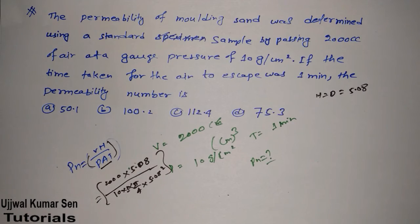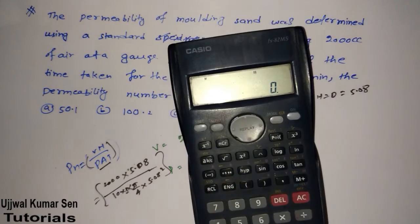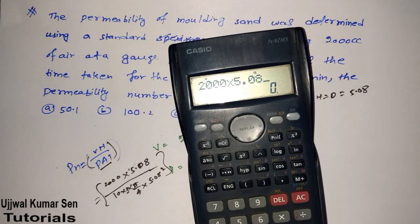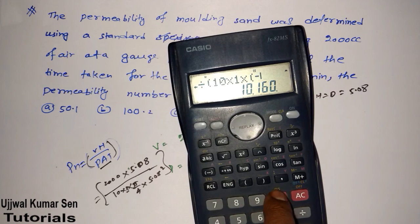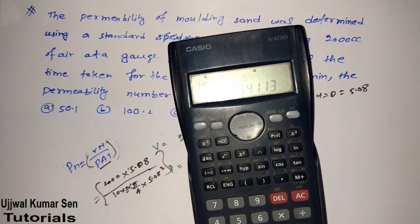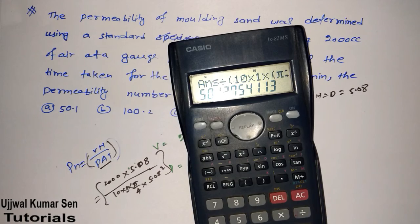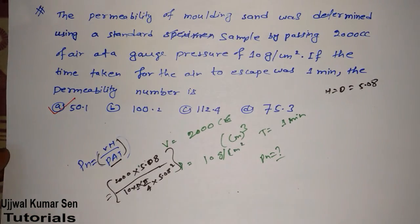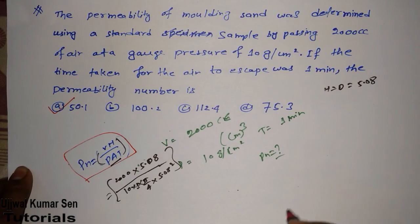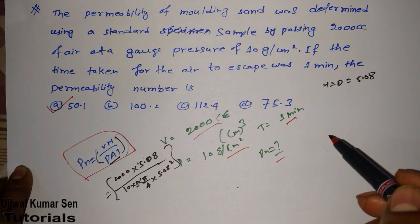Using a calculator: 2000 × 5.08 divided by 10 × (π/4) × (5.08²) × 1. The result we get is 550.1275. That is the permeability number for this question. To solve this correctly, the formula must be used with all values in the right units — centimeters and minutes — otherwise you will not get the correct answer.